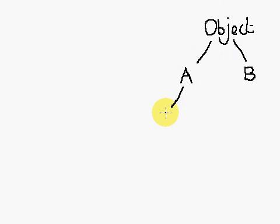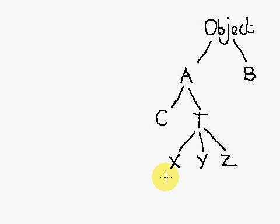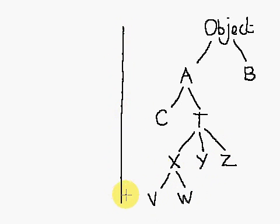Let's say we've got C which extends A and T which also extends A. And then we have X, Y, and Z which extends T. And just for good measure we have V and W which extends X. So we've got a class hierarchy which looks something like that.